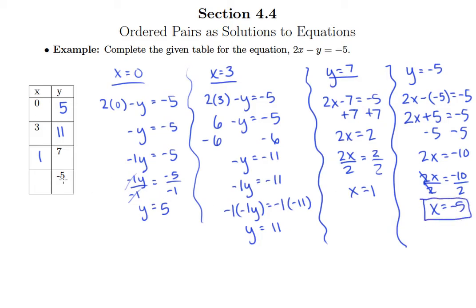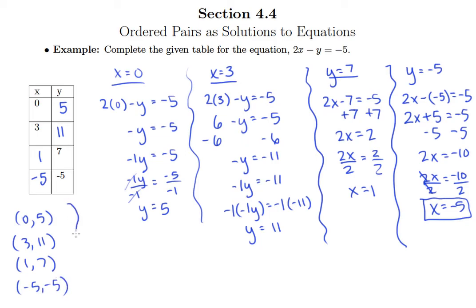So negative 5 for x goes with negative 5 for y. Please understand, these are all ordered pairs. So we know that 0 comma 5, 3 comma 11, 1 comma 7, and negative 5 comma negative 5 are all solutions to 2x minus y equals negative 5.